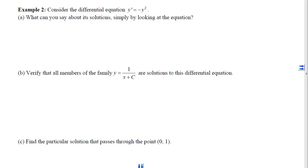With Example 2, we are given the differential equation y' equals negative y squared, and in Part A, we want to know what you can say about the solution simply by looking at the equation. So we want to think about what dy dx equals. dy dx equals negative y squared. That means the slope of the solution curves will always be the opposite of the y-coordinate squared. That's going to tell us that the slope is always negative. It will also tell us that the slope is small or shallow near the x-axis, and the slope is steep or large when we're far away from the x-axis.